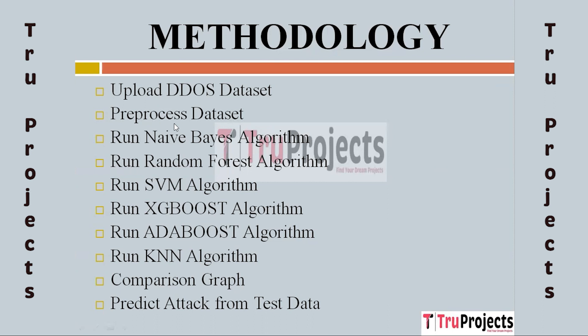So by applying a pre-processing technique we need to convert all non-numeric data to numeric. The second module is Pre-Processed Dataset. Using this module we will replace missing values with zero, then apply a label encoder technique which will assign a numeric ID to each non-numeric value, and then split the dataset into train and test where the application uses 80 percent of the data for training and 20 percent for testing.